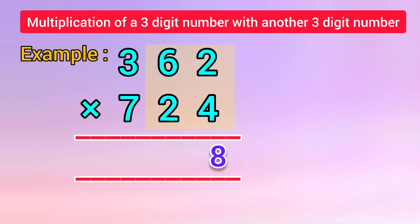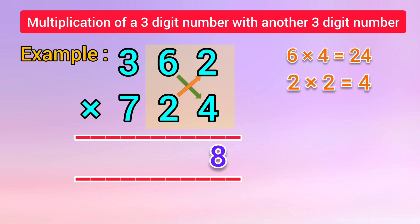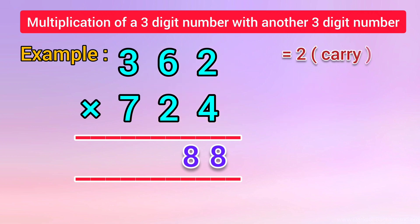In the second step, we cross-multiply the digits of the 2 columns from the right. That is, 6 into 4 is equal to 24, and 2 into 2 is equal to 4. We add both products: 24 plus 4 is equal to 28. We put down 8 and carry over 2 to the next step.